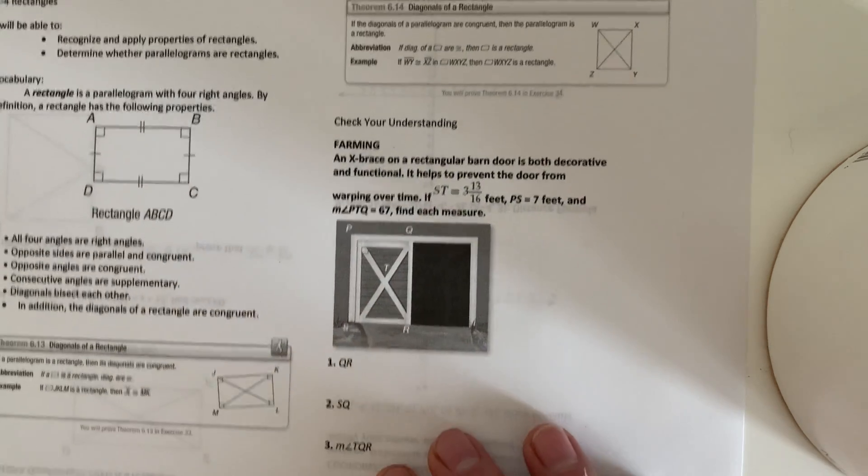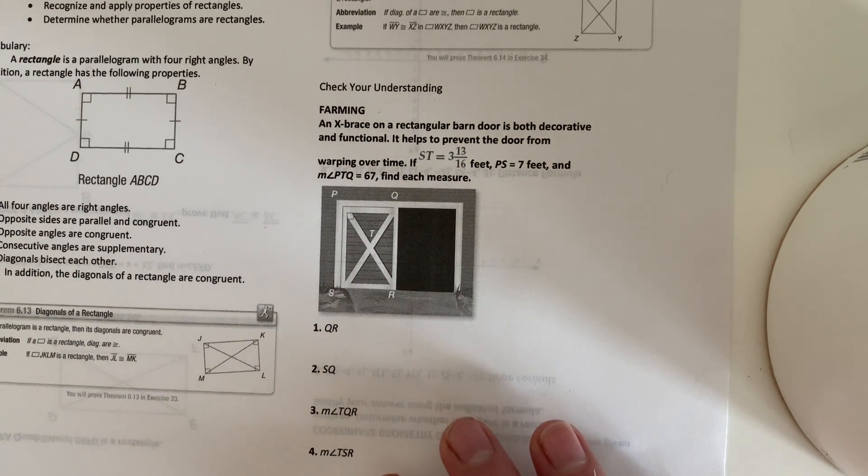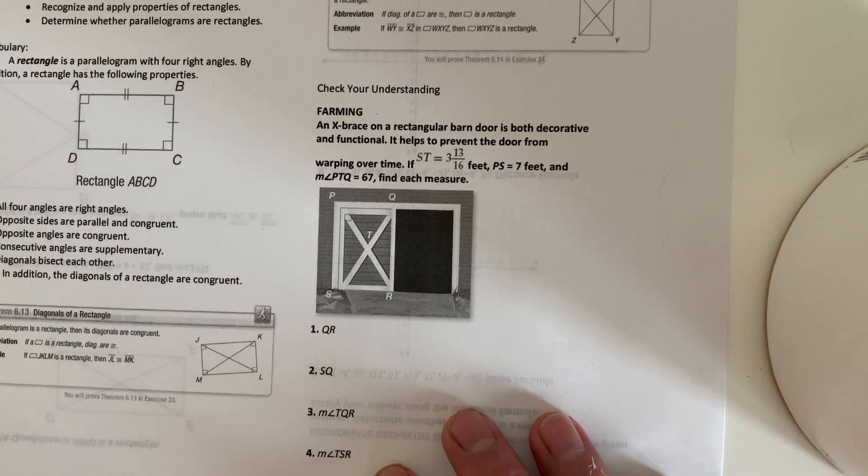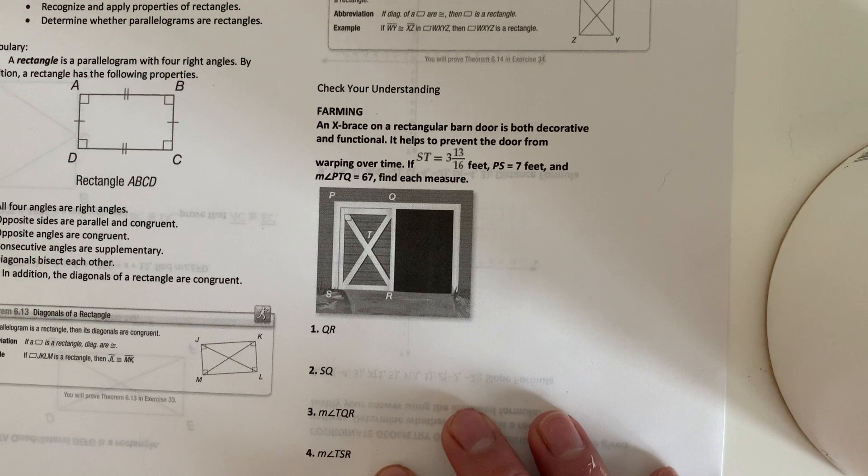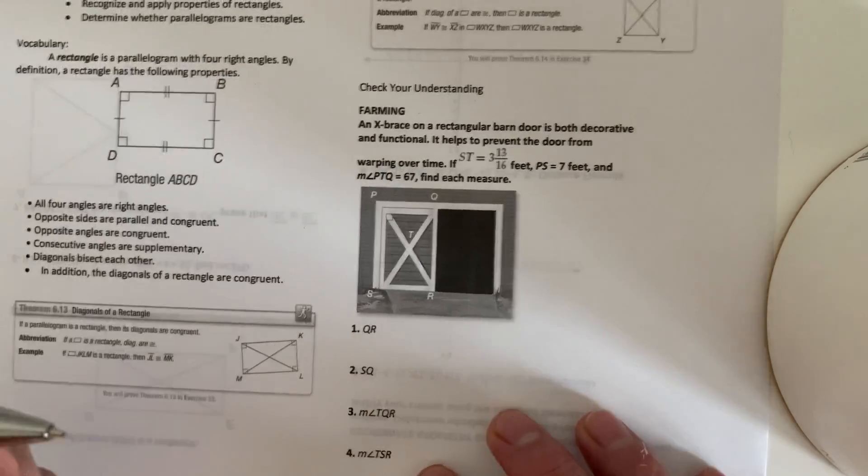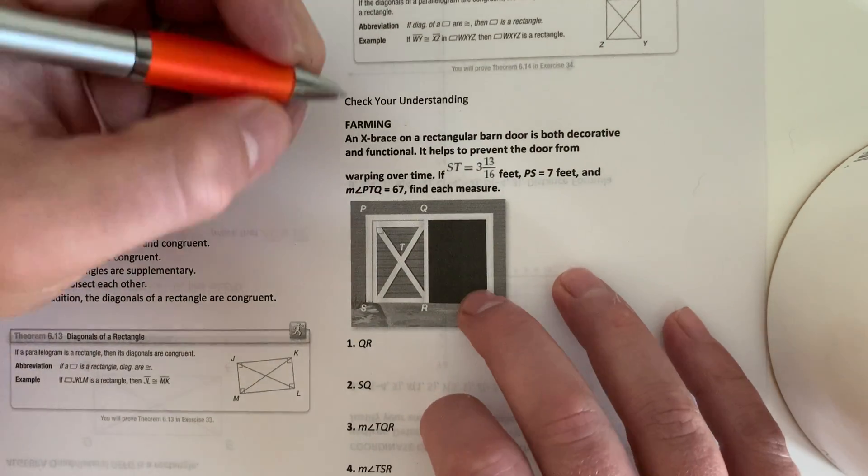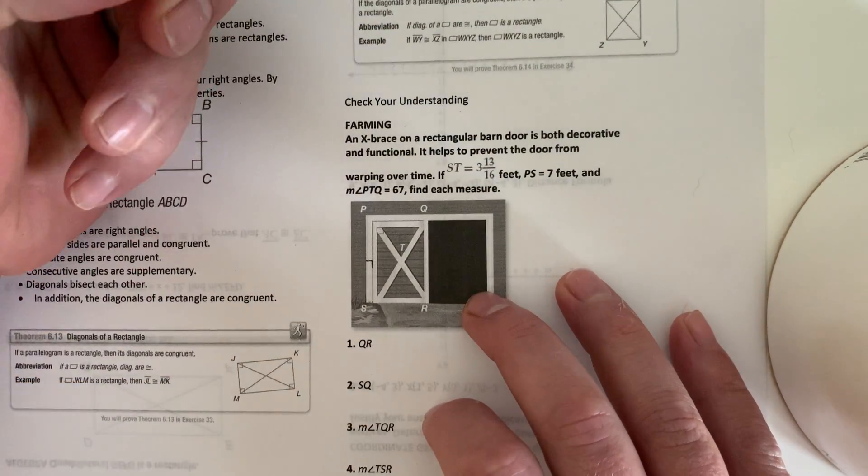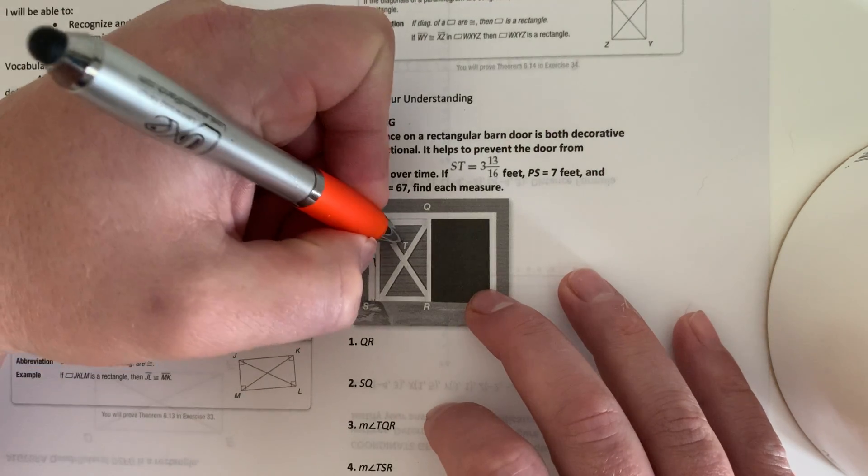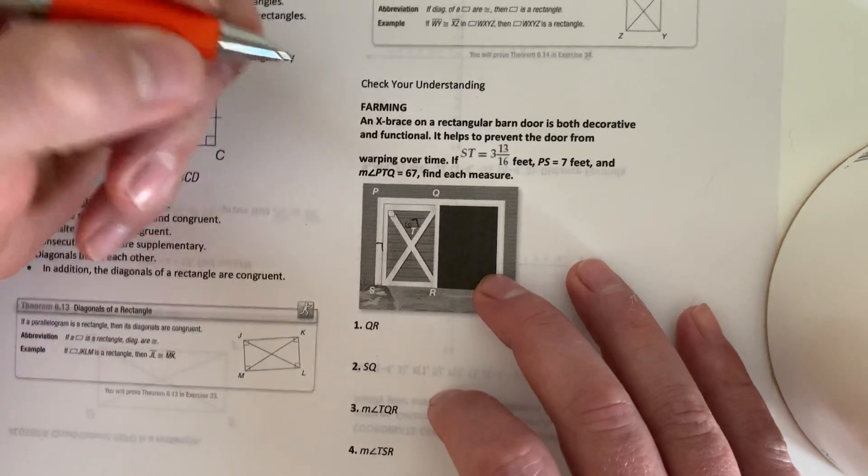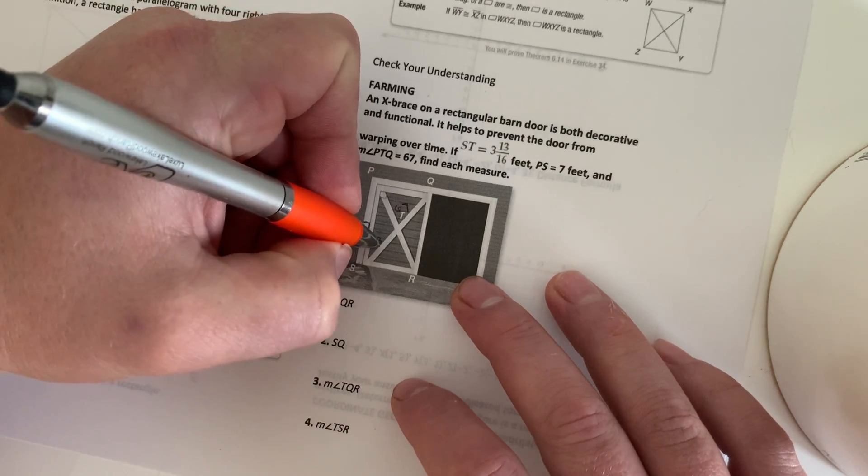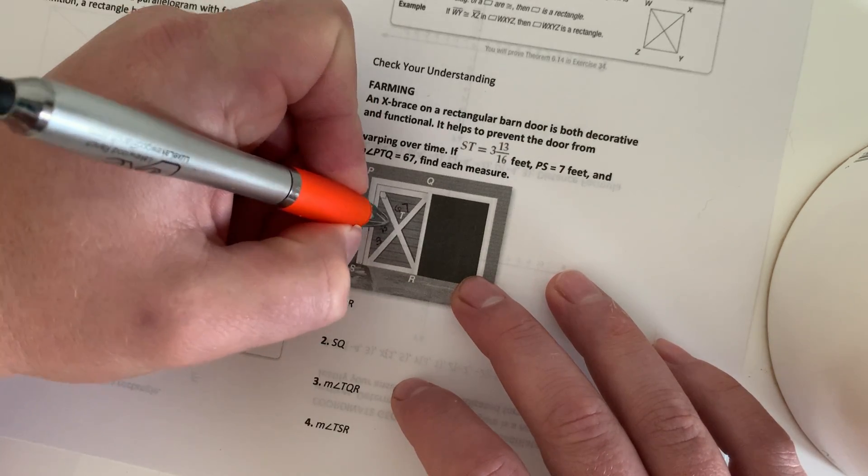So we're looking at this first example here. An X brace on a rectangular barn door is both decorative and functional. It helps to prevent the door from warping over time. So if ST equals 3 and 13 sixteenths feet, PS will equal 7 and angle PTQ will equal 67. So I'm going to go ahead and fill that stuff in. So PS, this side is 7. PTQ is 67. And then ST is 3 and 13 sixteenths.